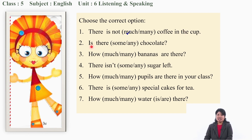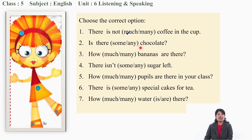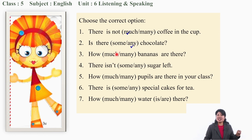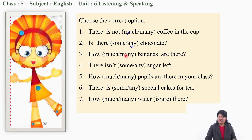Number two: 'Is there some/any chocolate?' What do we say - some or any? The right answer is 'any.' We say: 'Is there any chocolate?' The way we ask is: 'Is there any chocolate?'